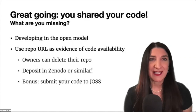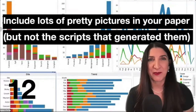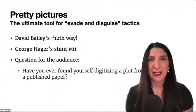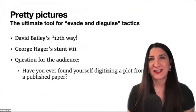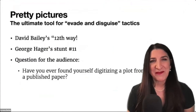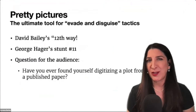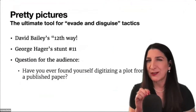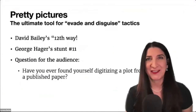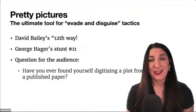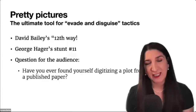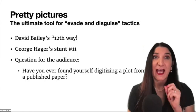That leads us to my last one for today, which is the same as Bailey's 12th way: include lots of pretty pictures in your paper, but not the scripts that generated them. This is Bailey's 12th way and is also related to Hager's stunt number 11 — he says five pages of busy bar graphs will go a long way to the 10-page limit. Have you ever found yourself digitizing a plot from a published paper, literally using mouse clicks to try to digitize plots? We've done it many, many times, because people are not publishing alongside their figures the underlying secondary data behind every point in that figure and the scripts that generated them.